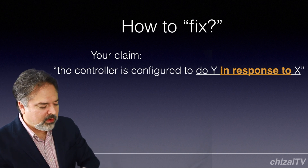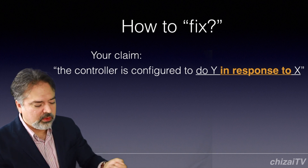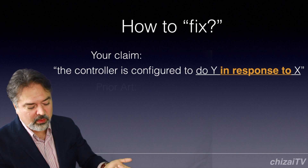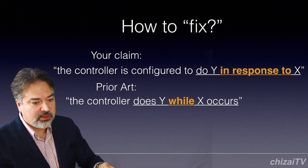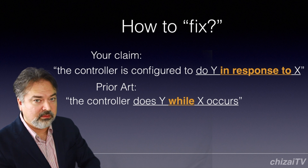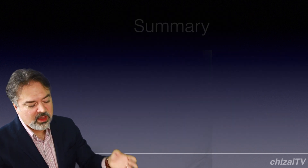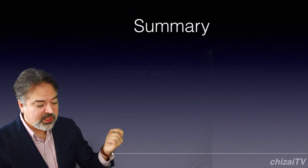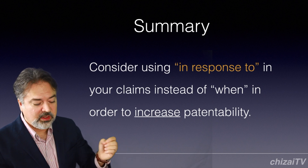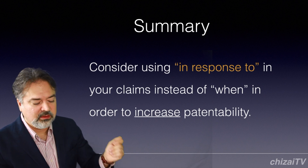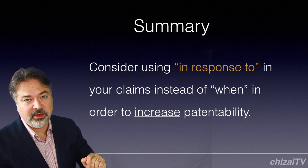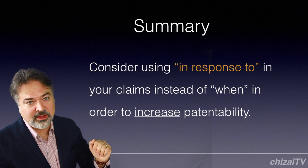So again, the prior art has the controller doing X while Y occurs. Now with this new claim language, it's capable of avoiding the cited art. So to summarize: consider using 'in response to' in your claims instead of using 'when,' in order to increase your patentability — the chance that you can get your claims allowed.